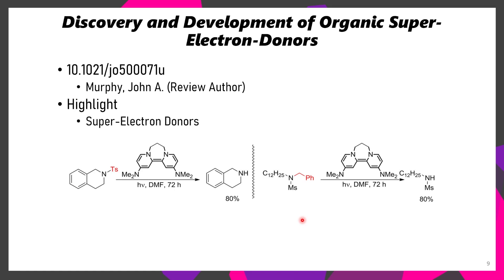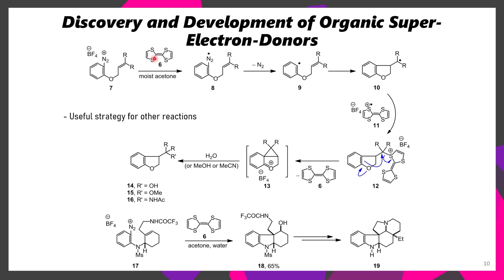The next type of reactivity that we're briefly going to be discussing is the discovery and development of organic superelectron donors. This example tends to go via two-electron reductions, so this might not be considered a radical by some people, but there are some other reagents which are superelectron donors able to go through a single-electron transfer process. If this reaction is being done in DMF, you're going to tend to have more two-electron reduction type processes, but if done in acetonitrile, you're going to favor one-electron type processes.